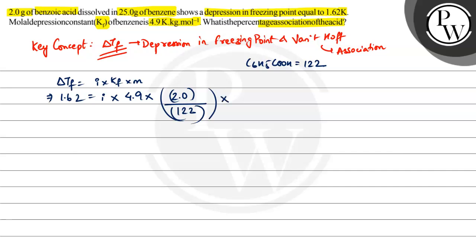This is the number of moles divided by mass of solvent in kg, so 25 grams into 1000, right?